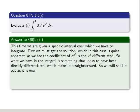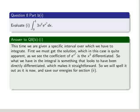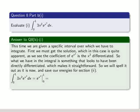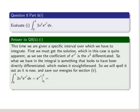So we will spell it out as it is now and save our energies for section 2. So we repeat the problem, and we realize that the integral of 3x squared times e to the power of x cubed is actually e to the power of x cubed. And we find the values over the interval 0 to 1.